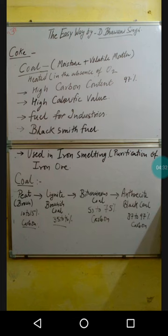Finally, when bituminous coal remains under the ground for a very long period of time, it gets converted into anthracite coal, which is one of the best coals in the world. It contains 87 to 97 percent carbon content, and we call it black coal. It is the pure form of coal, having high ignition value, high calorific value, and it burns with less smoke because of its high carbon content. Thank you, have a nice day! If you like my channel, please subscribe and share with your friends.